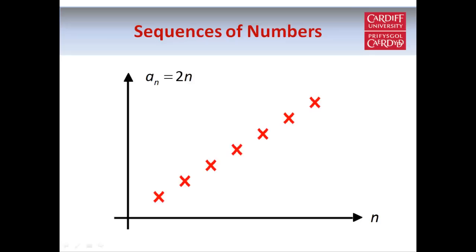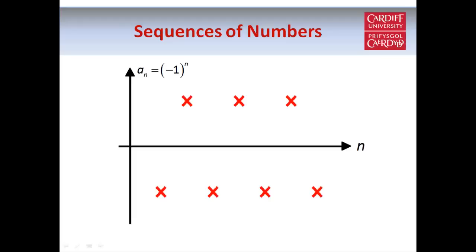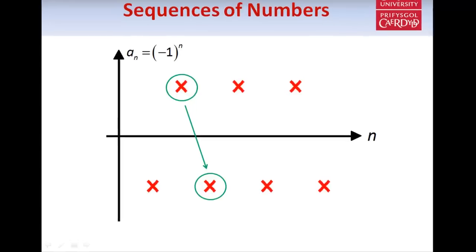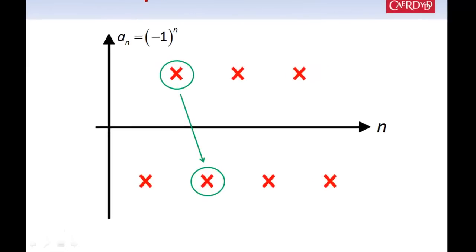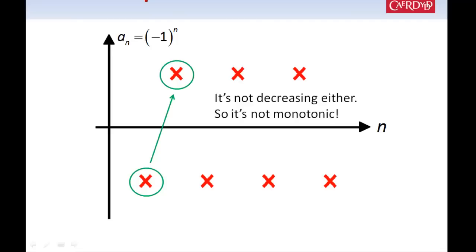Let's look back at our earlier sequences and determine whether they're monotonic. For a_n equals 2n, every term is greater than the term before it, so it's strictly increasing and therefore monotonic — we can say it's monotonically strictly increasing. On the other hand, for a_n equals minus 1 to the power n, the third term is smaller than the second, so the sequence is not increasing. And it's not decreasing either, because the second term is greater than the first. So this sequence isn't increasing or decreasing, and therefore it's not monotonic.